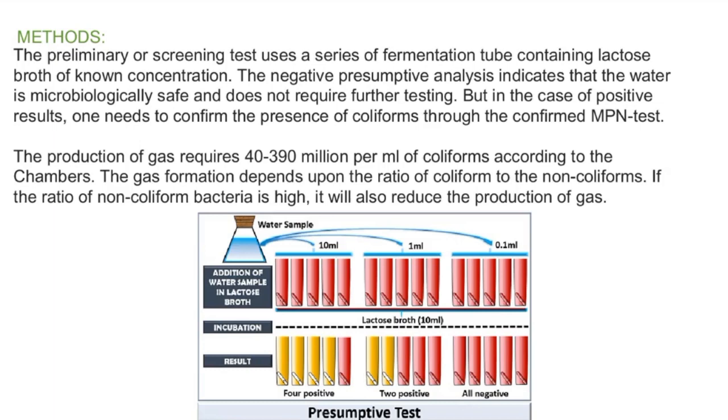The Most Probable Number method involves three consecutive tests: first is the presumptive test, then the confirmatory test, and then the completed test.